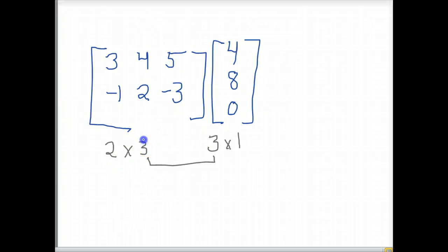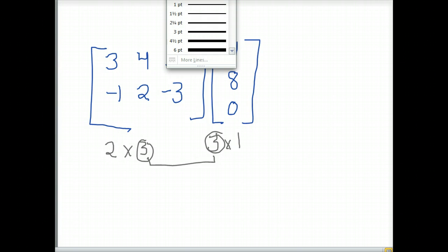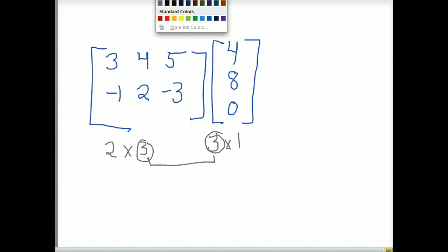So now that we know that they have an agreeing value in the middle, or 3, we know that we can go ahead and multiply them. So let's take a look at the first entry in our multiplication.